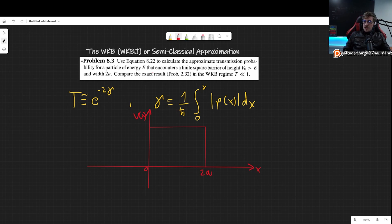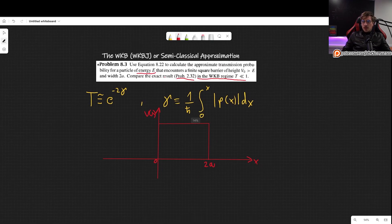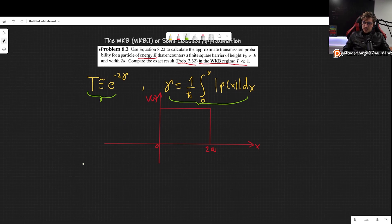So this is what we have, and we wish to find the transmission coefficient for a particle of energy E, and then compare the exact result that we found in problem 2.32. We have to consider that we are in the WKB regime, so our transmission coefficient has to be very small. That is a condition for the WKB approximation to actually work. So let's just do this.